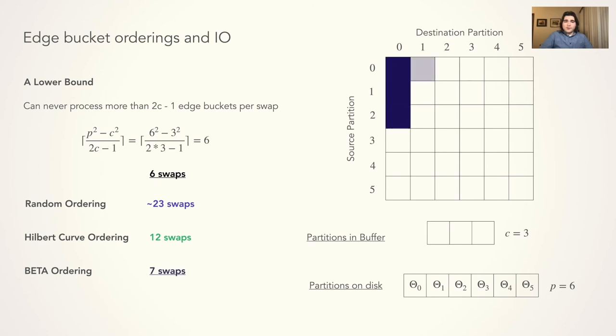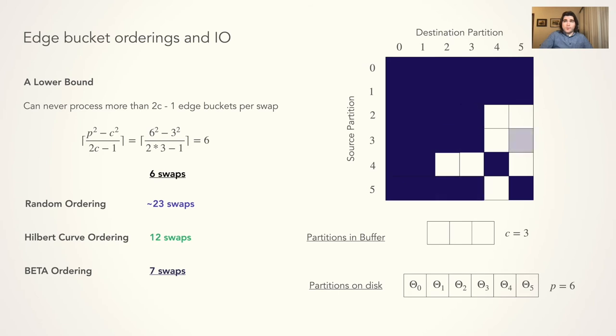And as animated here, the BETA ordering is able to achieve a number of swaps near the lower bound, with only about 7 swaps. We next go into detail on the algorithm to generate the ordering.